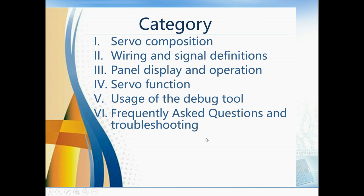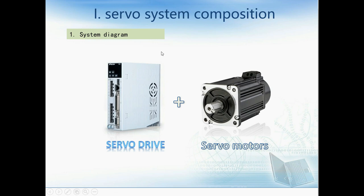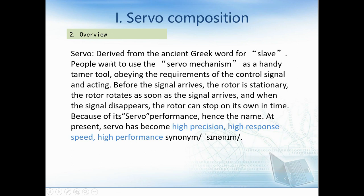The WeconServo drive is composed of two parts, namely the servo drive and the servo motors. The word 'servo' is derived from the ancient Greek word for slave. It means the servo can move at a specified speed and distance. Before the signal arrives, the rotor is stationary. The rotor rotates as soon as the signal arrives, and when the signal disappears, the rotor can stop on its own — hence the name.